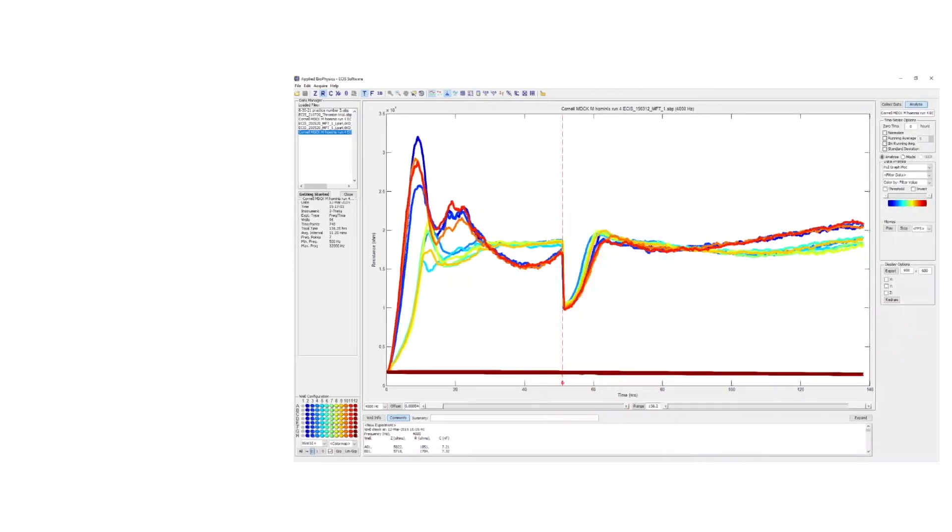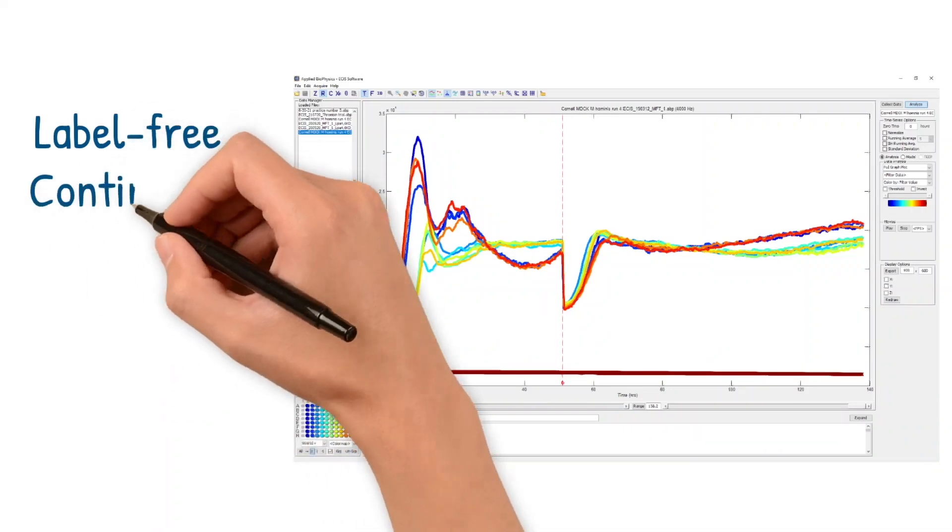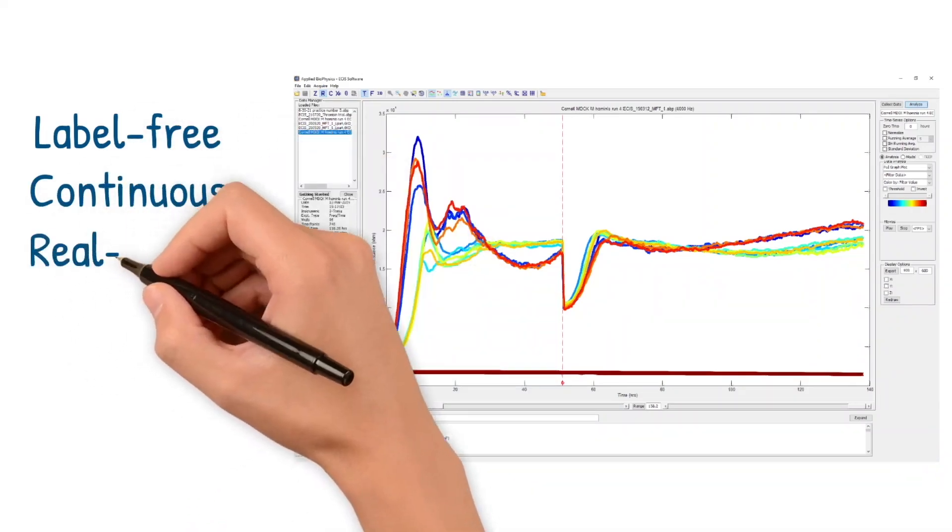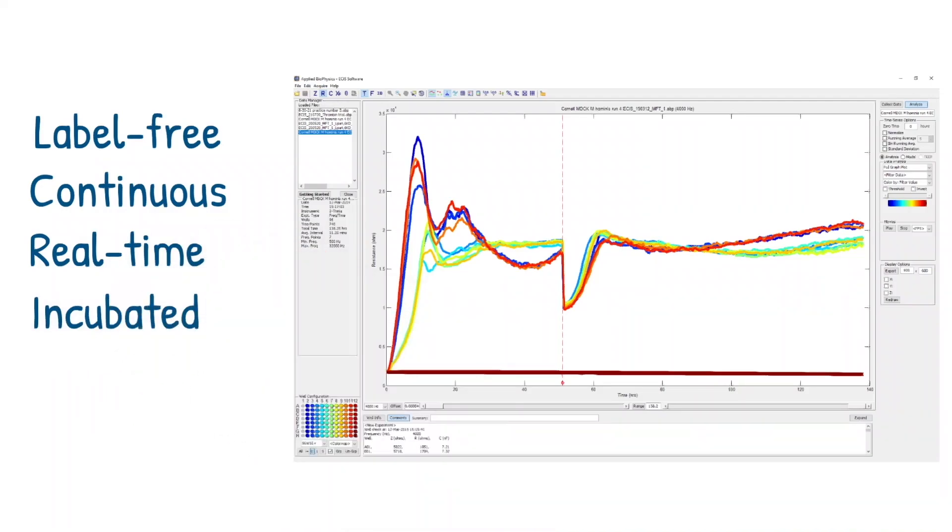ECIS is a label-free method, meaning no fluorescent tags or dyes, to measure multiple cell behaviors in vitro, continuously, in real time, while the cells remain inside of the incubator.